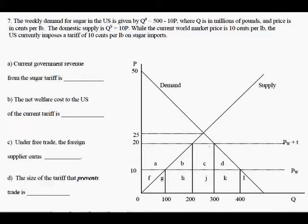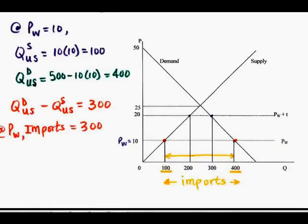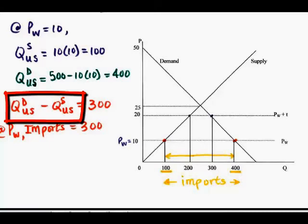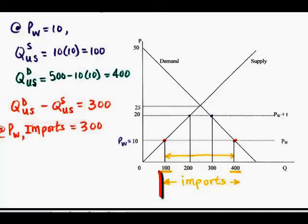When the tariff is imposed, the quantity of imports goes down. So with free trade, we plug in a price of 10 into the excess demand. You would take the demand minus the supply. So the excess demand, which is imports, would be 400 minus 100, this horizontal segment right here, or the difference between 400 and 100, which is 300.